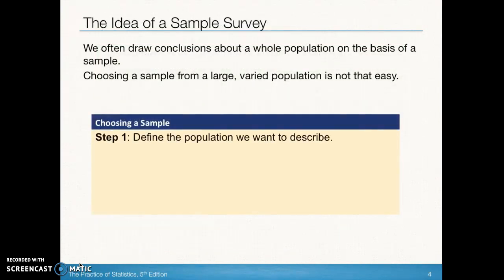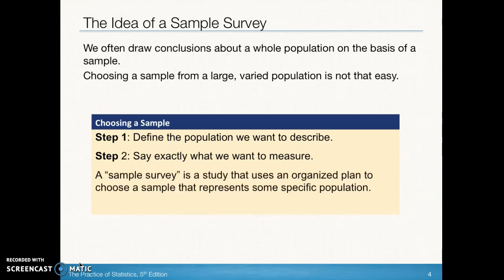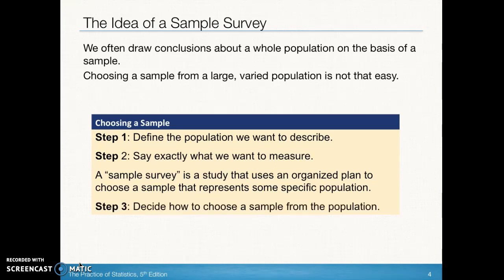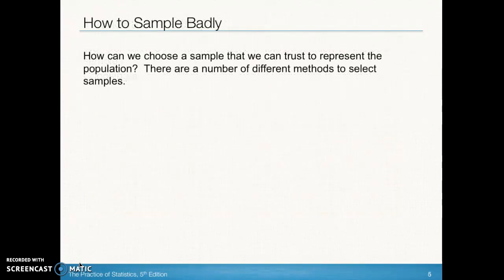So how can we choose a sample? The first thing we need to do is define the population of interest. Next, we need to figure out what specific data we want — a numerical variable, a categorical variable — what we want to measure. Then we need to come up with a data collection mechanism, such as a survey. Finally, we need to decide how to choose the sample from the population. We might put names in a hat or use a random number generator from our calculator. We want to collect data in a way that allows us to make the inferences we want to make.